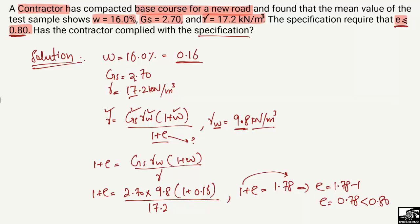Since our calculated void ratio e = 0.78 is less than the specification requirement of 0.80, the soil sample from the compacted base course meets the specification. This means the base course is well compacted, and the contractor has complied with the specification.